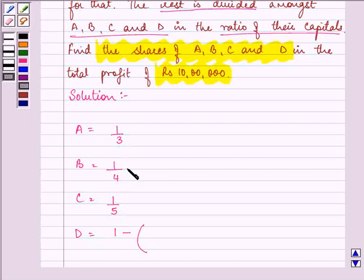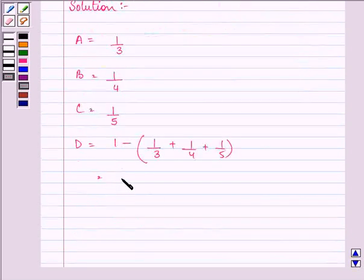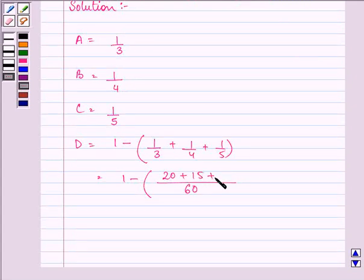So it will be 1 minus the sum of all these shares. So we have it as 1 minus, we take the LCM of these three and that is their multiplication. So we have 20 plus 15 plus 12. That is 1 minus 47 upon 60. That is equal to 13 upon 60.